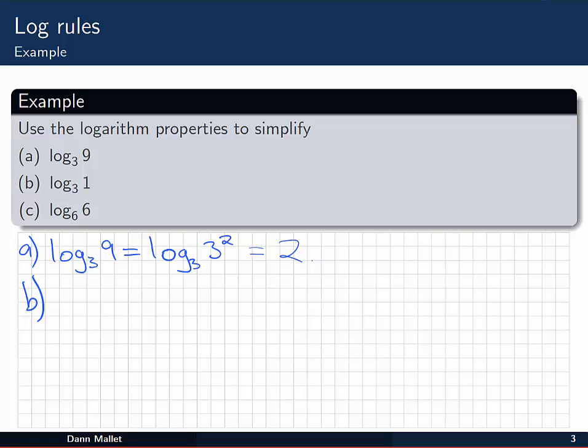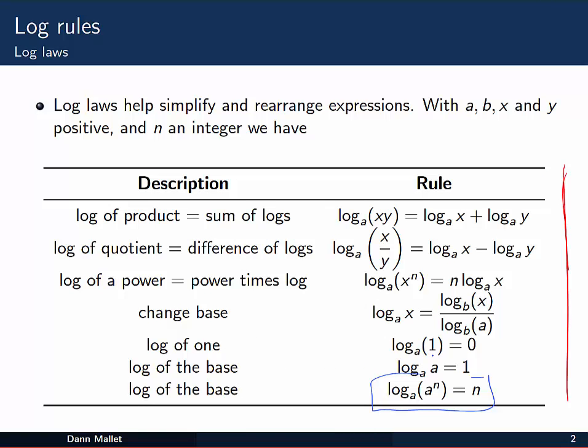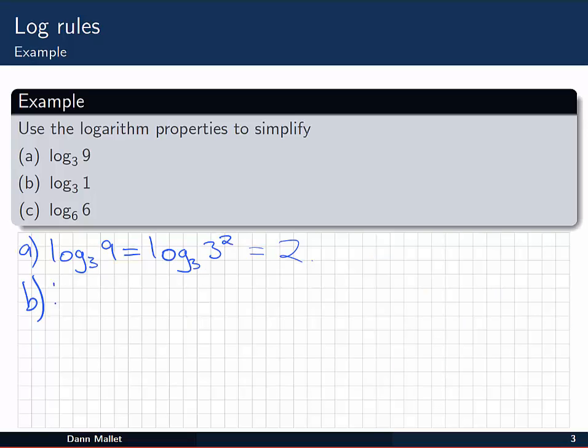Next I have log base 3 of 1. The rules tell me that regardless of the base, the log of 1 is always going to be equal to 0. So I can simply apply that one straight away. Log base 3 of 1 is equal to 0.